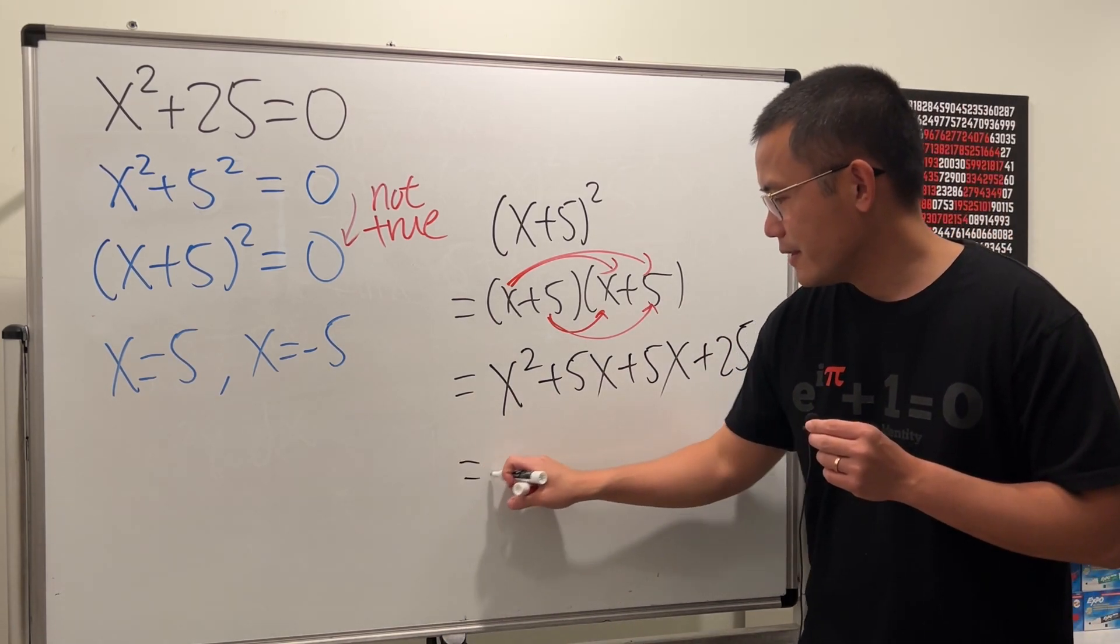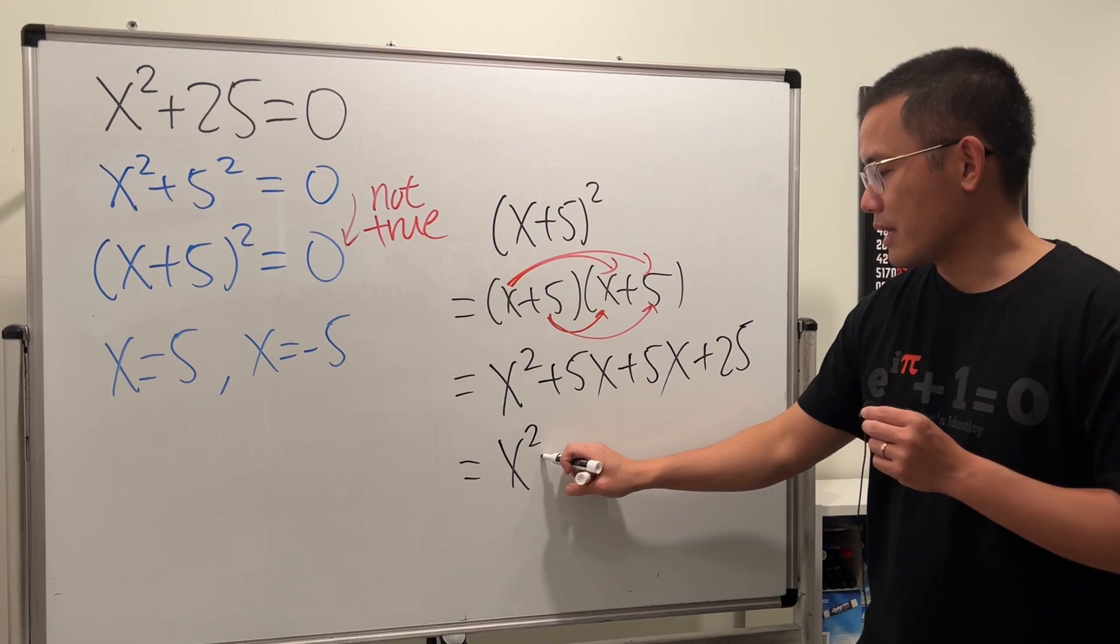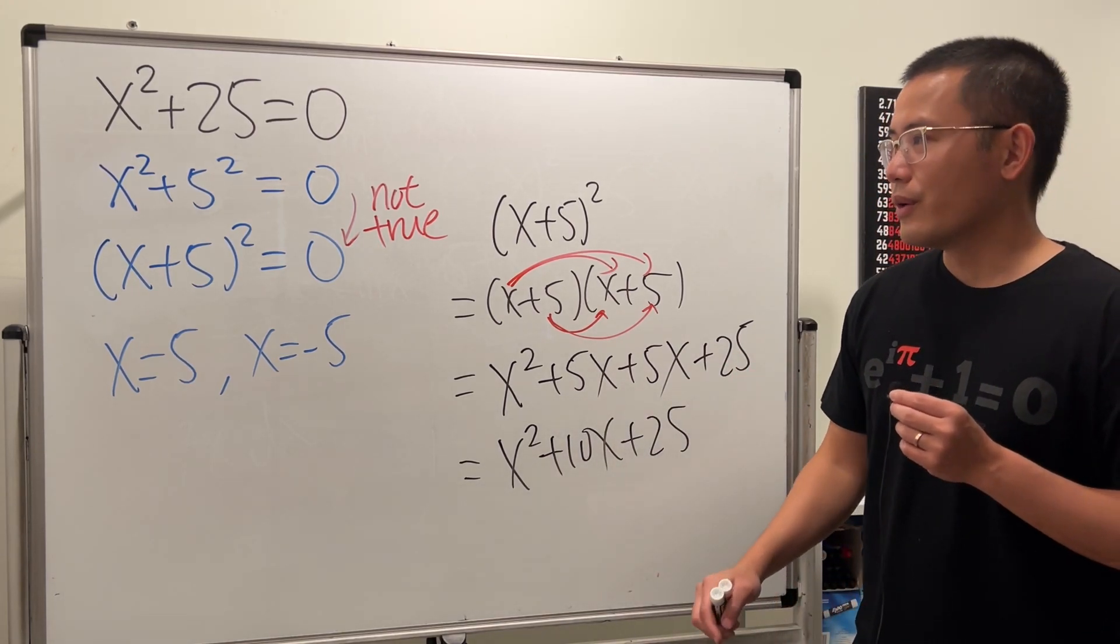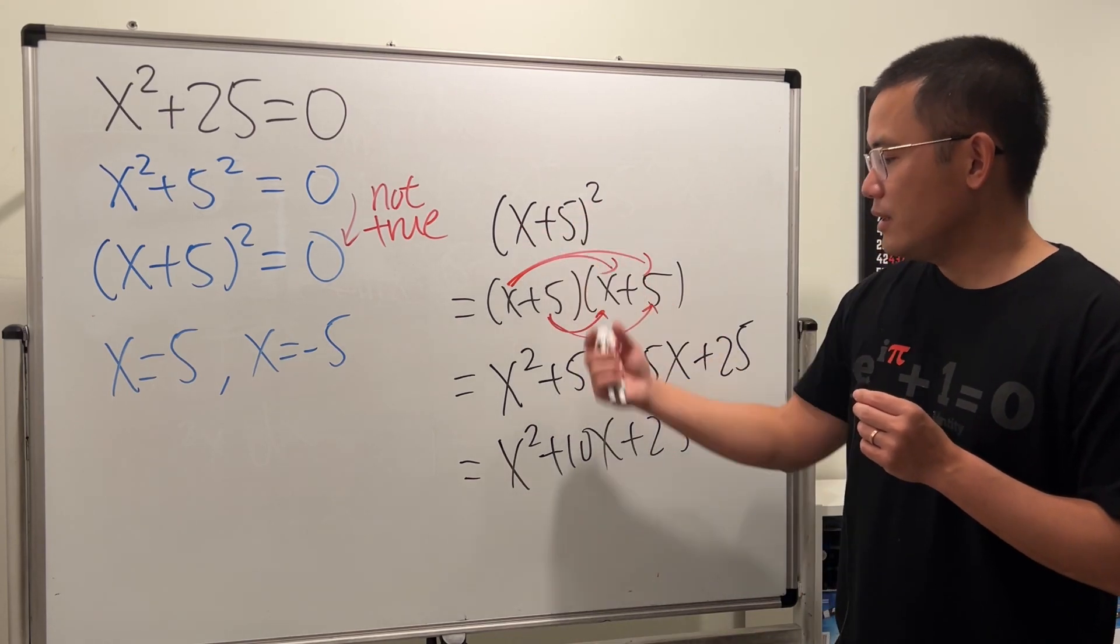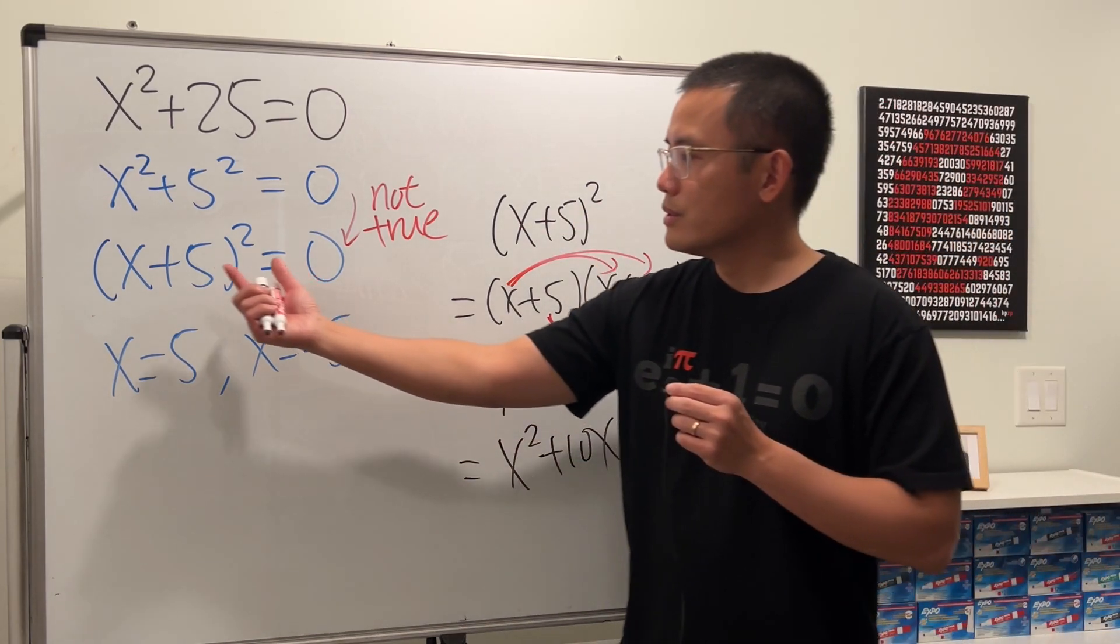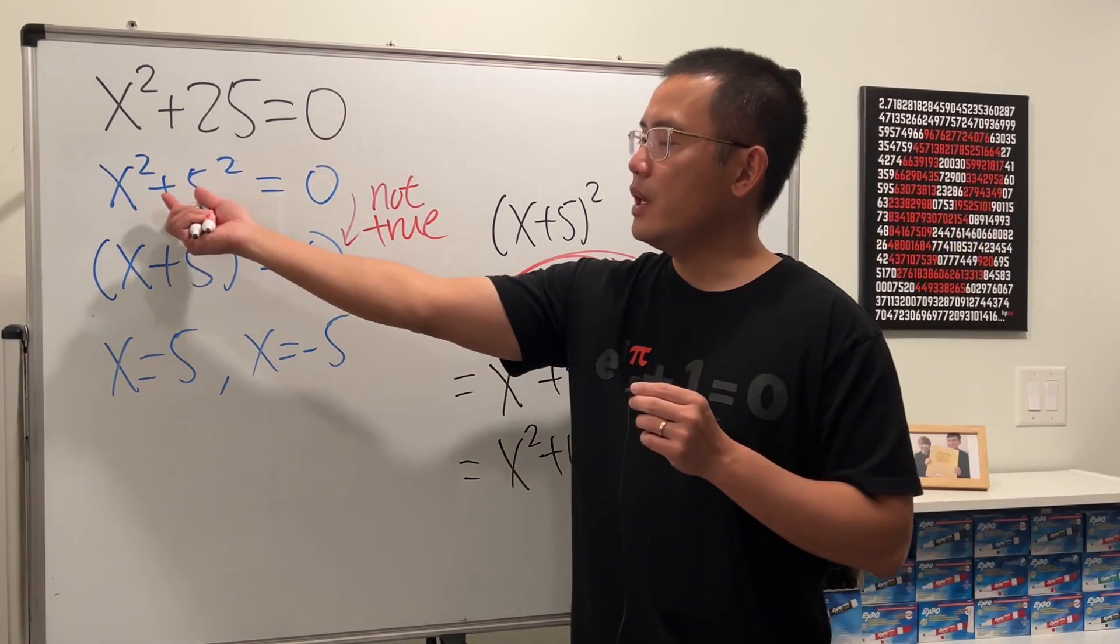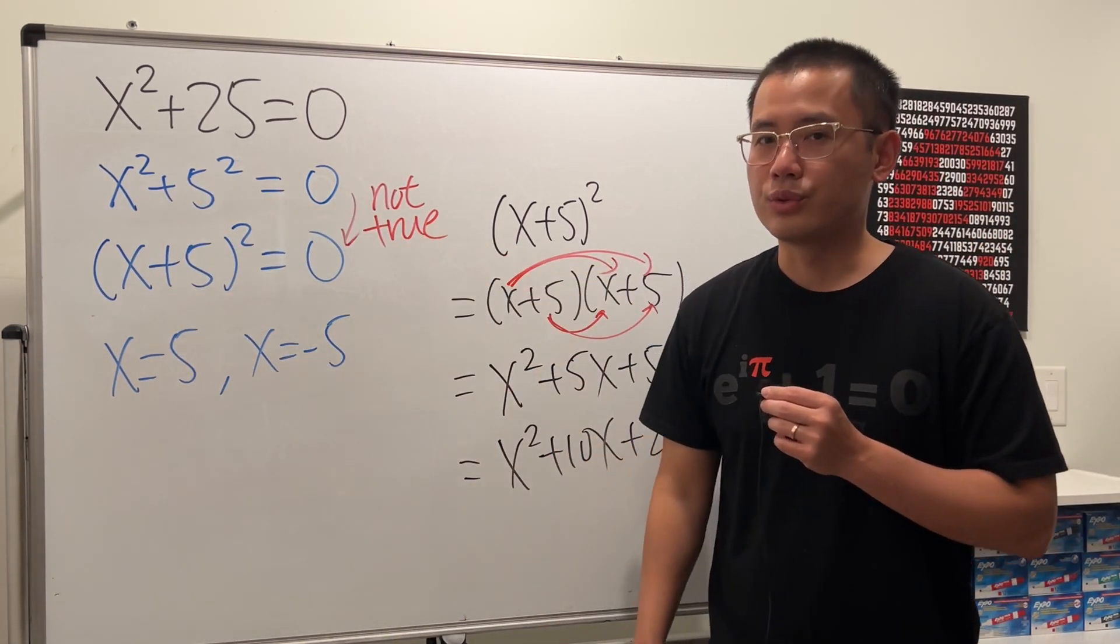Lastly, take this times that is +25. So as you can see, x² + 10x + 25. So if you expand it, you get this. This is not the same as that, because here we have the middle term, but here we didn't have the middle term. So that's not true.